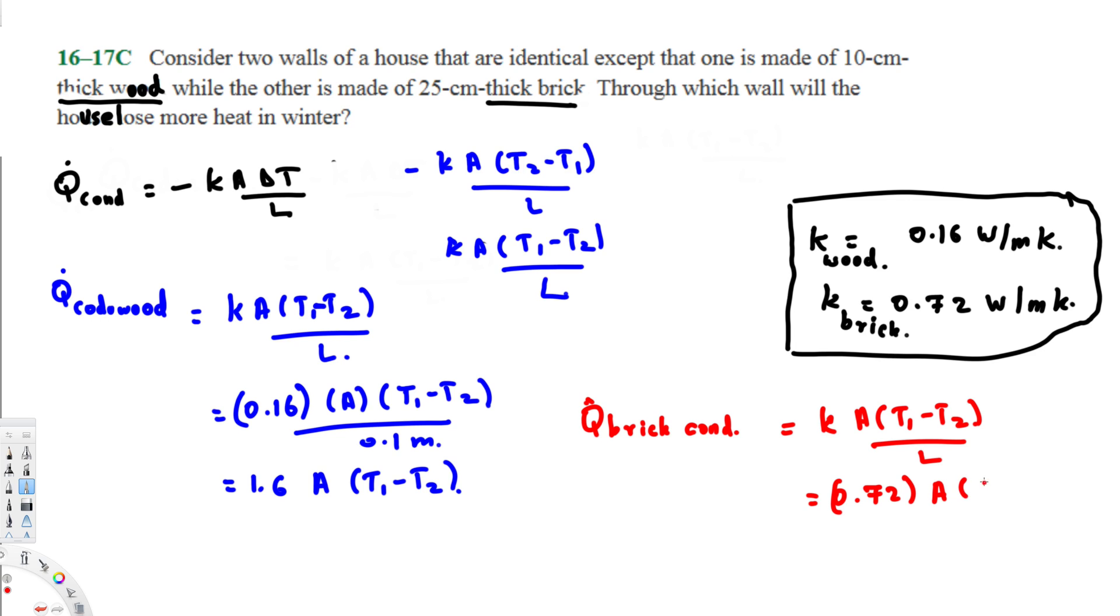Over the length of this brick, which is given by 25 centimeters, that's the same as 0.25 meter. If you simplify this one, that's going to give you 2.88 A times (T1 minus T2).